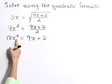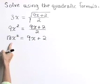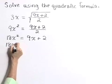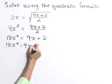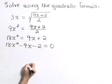We see we have a quadratic equation. Let's put everything on one side and write this in standard form as 18x squared minus 9x minus 2 is equal to 0.